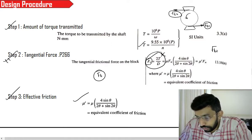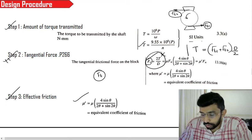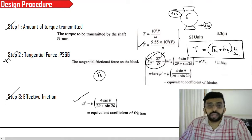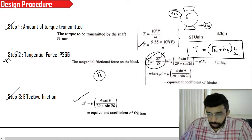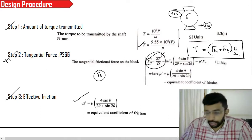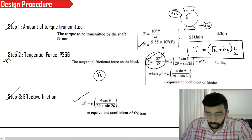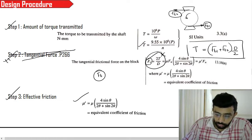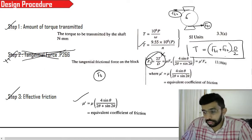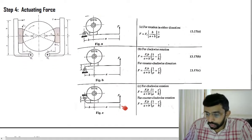Here we are just getting an Ft and this is not the right Ft. The correct relation is: Ft1 plus Ft2 into D by 2 is going to be equal to torque. So in step number 2, you are not going to get the value of Ft1 or Ft2 directly. You only have Ft1 plus Ft2 into D by 2 equals T. This is how the relation will look. Now let us move forward and see how it is being solved.